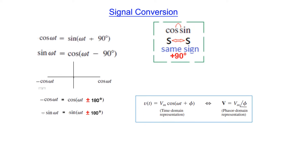Finally, to convert a sinusoidal signal into the phasor domain, you must first make sure it is a cosine signal, not a sine signal. If it is a sine signal you need to convert it first, then write the magnitude and angle — that gives you the phasor value.